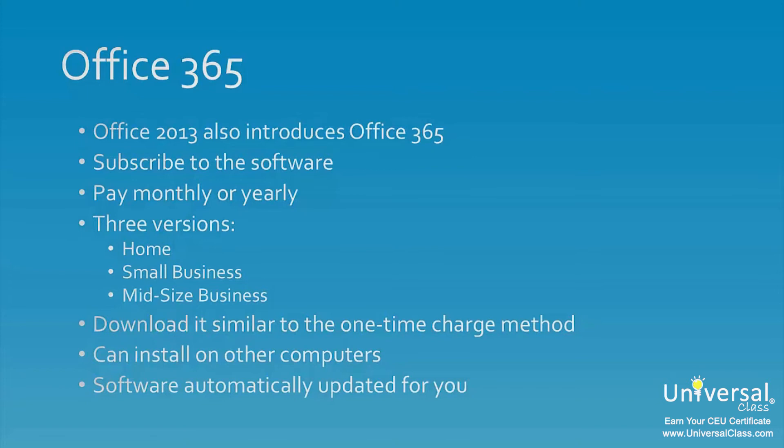The price of your subscription will be determined by the version you want: home, small business or mid-sized business. Once you purchase a subscription, you'll be able to download Office 2013 on your computer just as you would if you bought the software in the store. As part of Office 365, the subscription also includes multiple licences, which will give you the ability to install the software on other computers as well. This is a perk that doesn't come with buying the software in store.